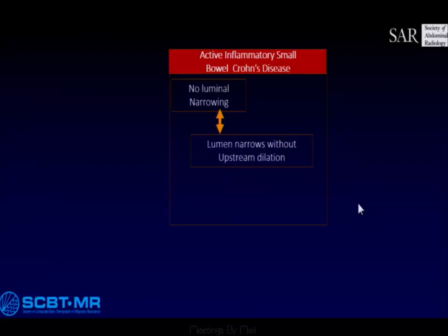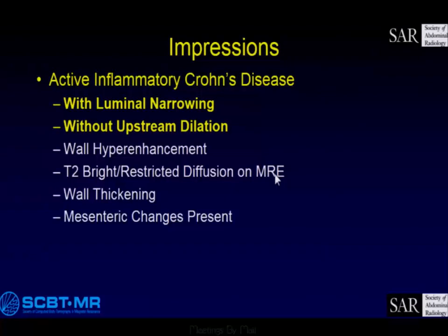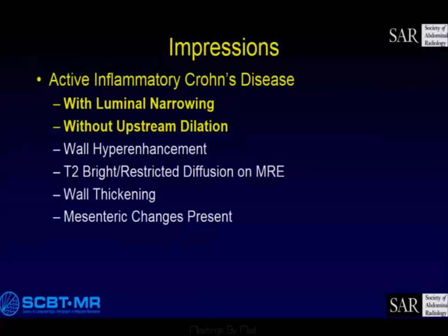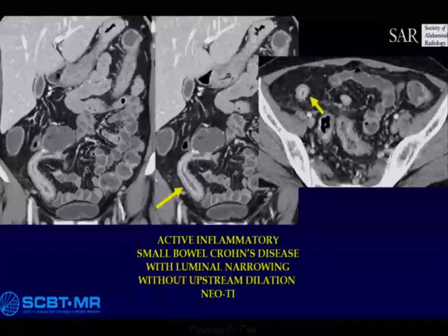What happens when things progress? The lumen narrows, but there's no upstream dilation. So again: luminal narrowing, no upstream dilation, hyperenhancement, T2 bright, restricted diffusion, wall thickening, and mesenteric changes.